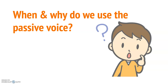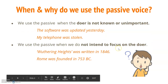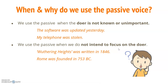When and why do we use the passive voice? We use the passive voice when the doer is not known or unimportant. For example: 'The software was updated yesterday' and 'My telephone was stolen.' In both these sentences we don't have the doer — we don't know who updated the software or who stole the telephone, either because we don't know who they are or we think they're unimportant.